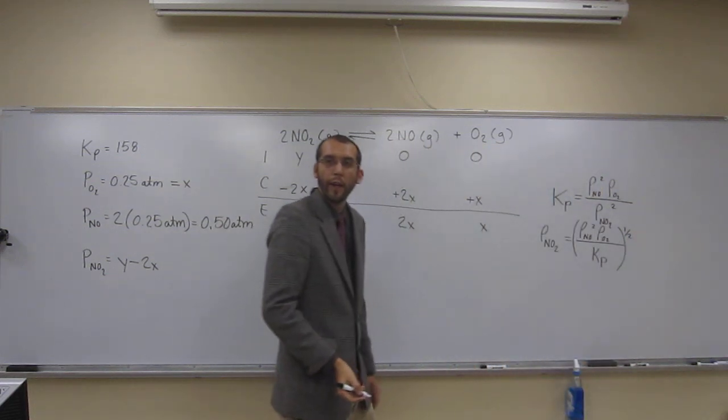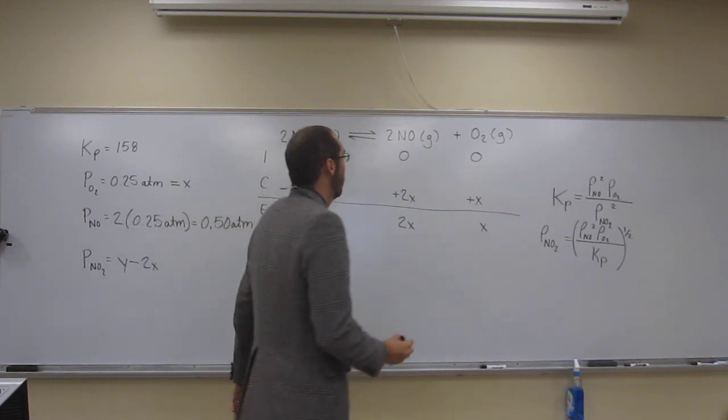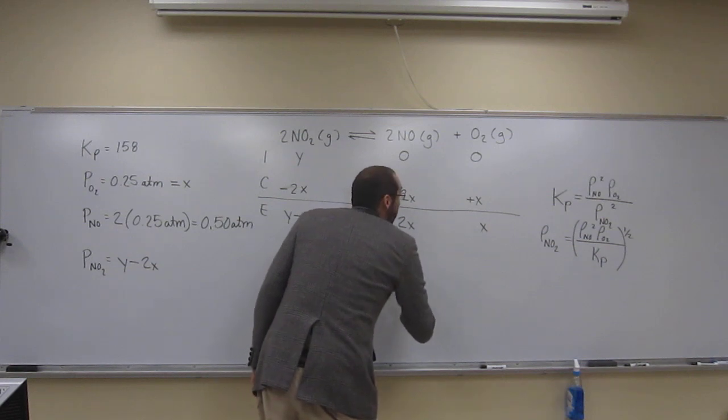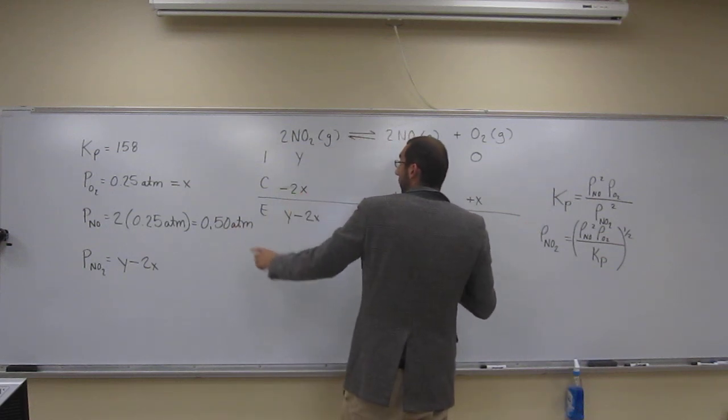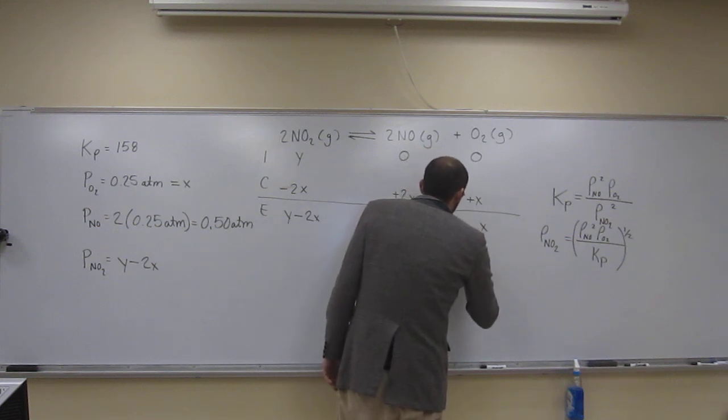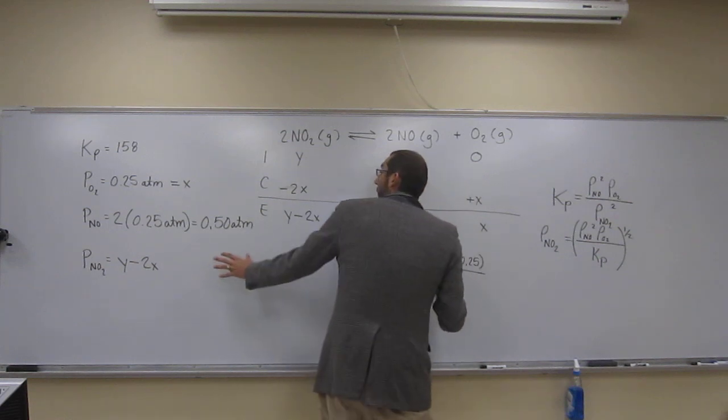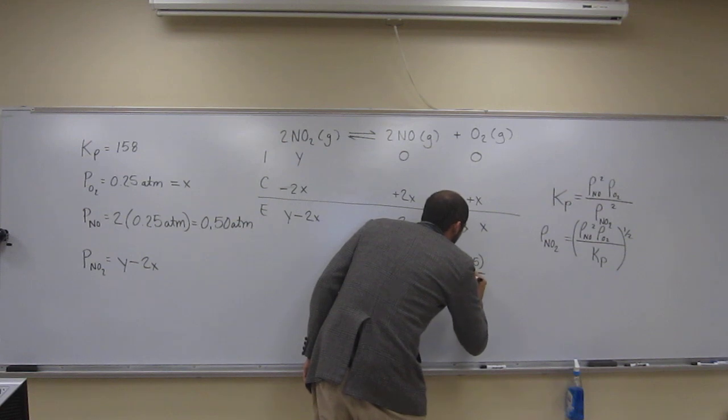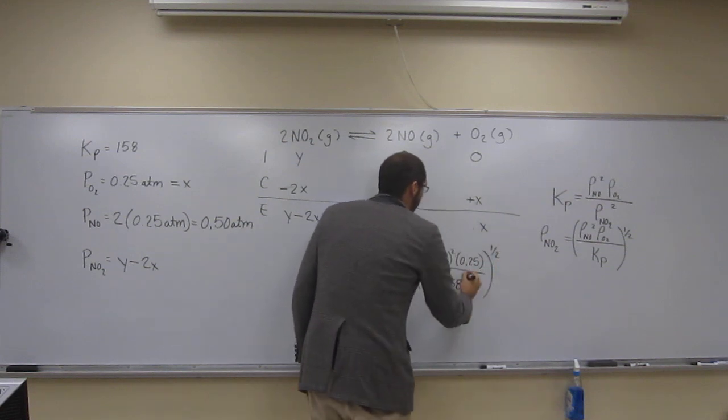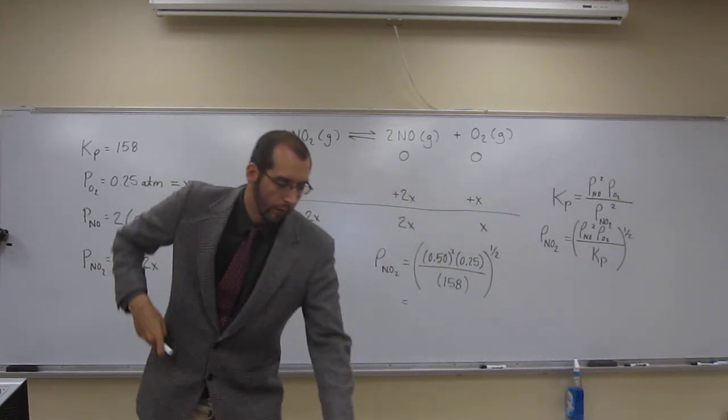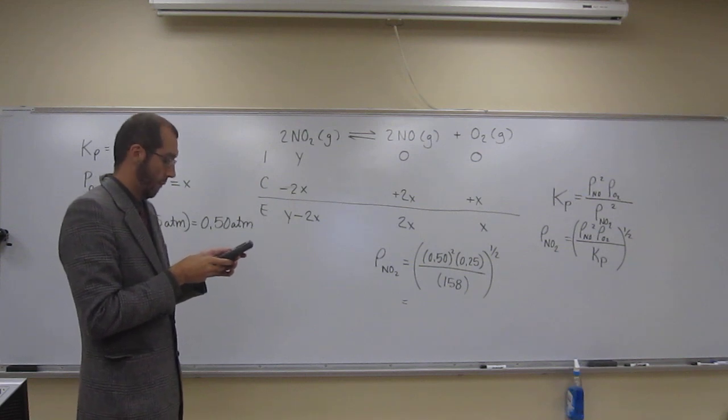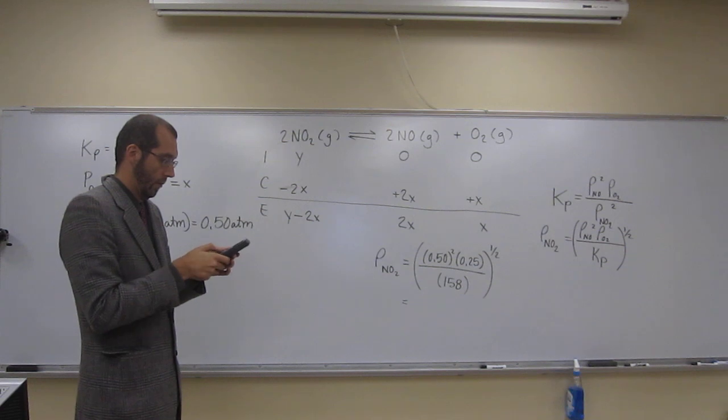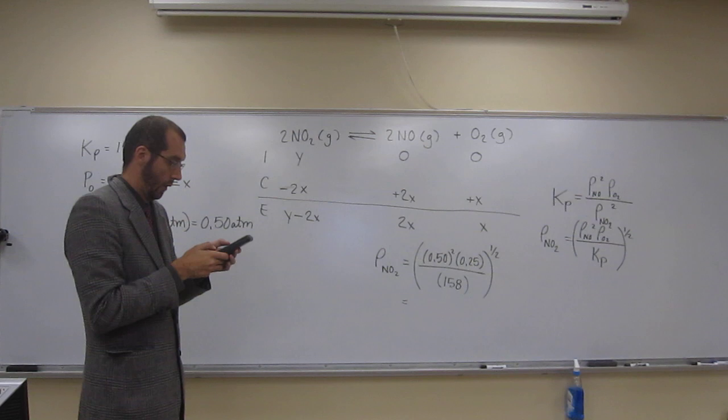So let's just take that and take the square root of this side, so we can raise the whole thing to the one half over there. Is everybody okay with doing that? The same thing as taking the square root. So the partial pressure of NO2 is going to equal 0.50 squared times 0.25 divided by 158. And then we're going to take the square root of that whole thing.